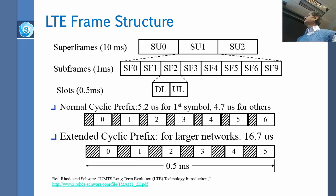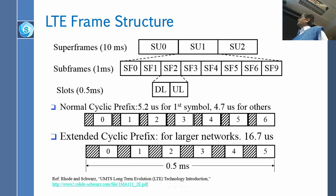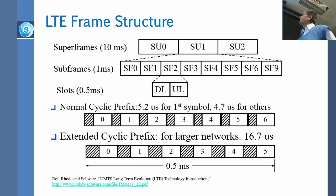There is a super frame which is 10 milliseconds long — super frame 0, super frame 1, super frame 2, each of these is 10 milliseconds. For some reason, they do not call it a frame. Each super frame consists of subframes which are 1 millisecond long — SF 0, SF 1 up to SF 9, each 1 millisecond long.